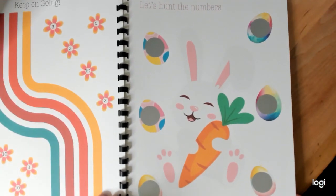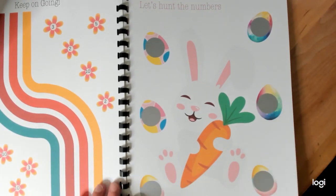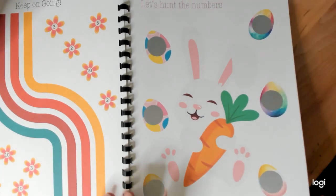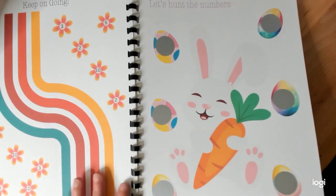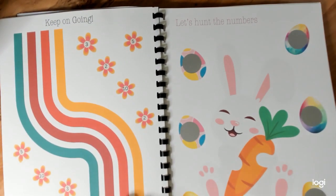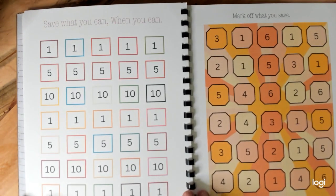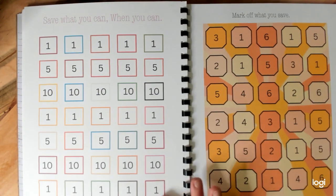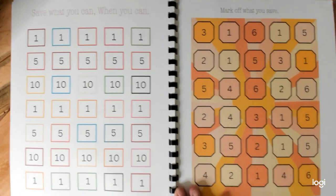And then you can use this one over here for like if you wanted to do April for Easter or hunt the little eggs. It says let's hunt the numbers. This one is ones, fives, and tens. If you save all this, you'll save $165.